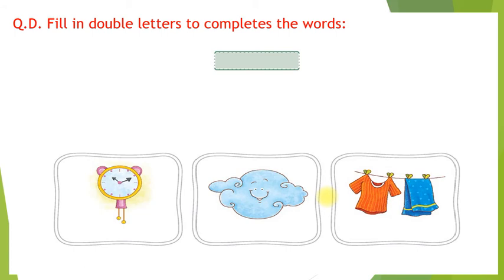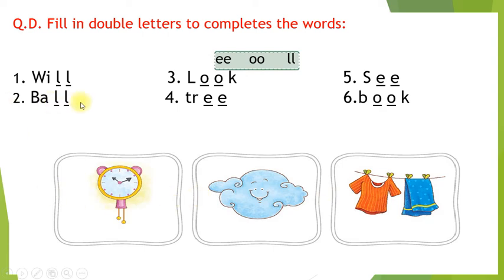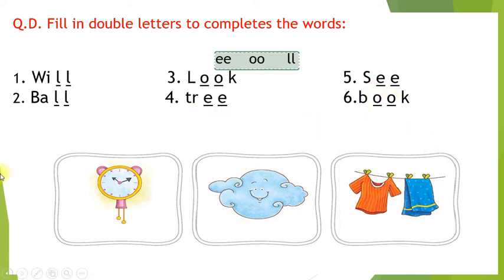Fill in double letters to complete the words. First: W-I-double L — will. Second: B-A-double L — ball. L-double O — look. T-R-double E — tree. S-double E — see. B-double O — book.